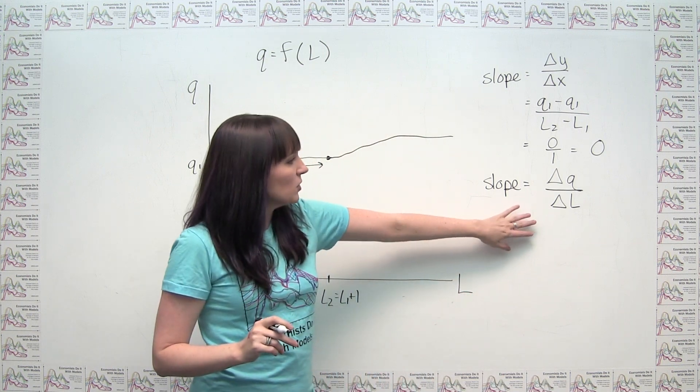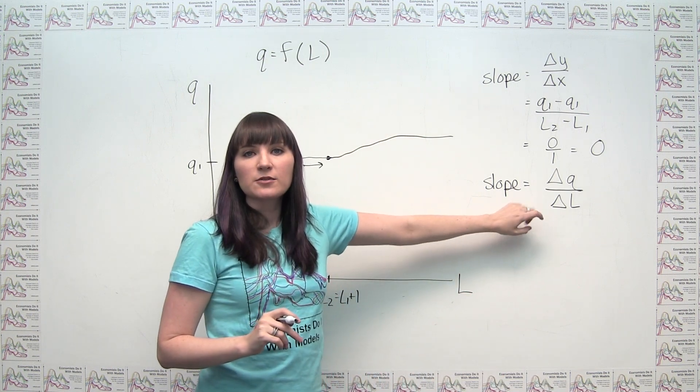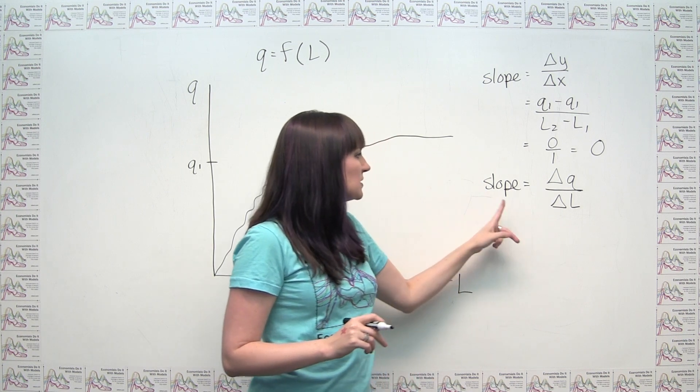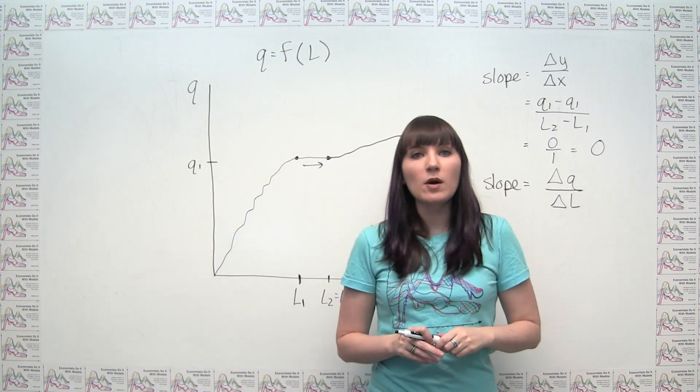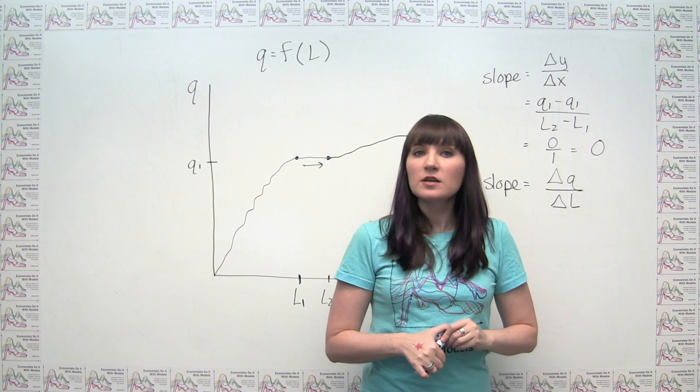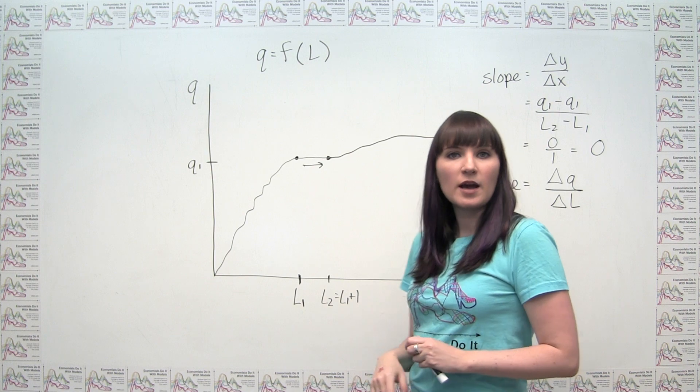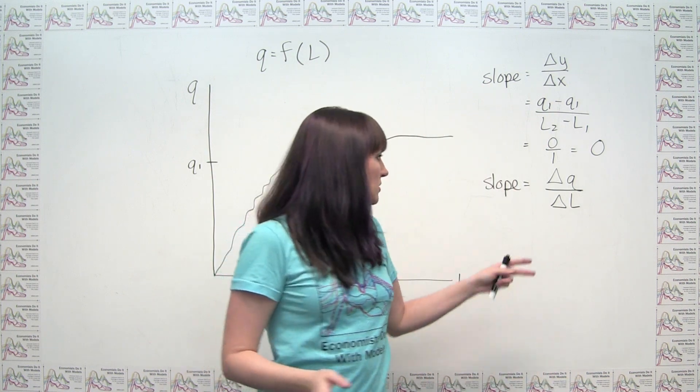Which, hey, guess what? This is how we defined our marginal product of labor. So we can actually see why our marginal product of labor can be shown by the slope of the production function at any particular point. Which is pretty interesting.